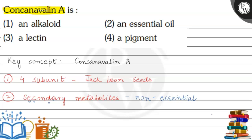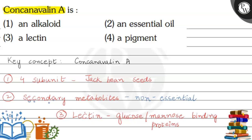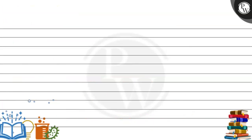There are various types of secondary metabolites, and the type to which Con Canavalin A belongs is lectin. Lectins are proteins which are glucose or mannose binding proteins — they bind to carbohydrates like glucose and mannose. Con Canavalin A is a type of lectin, and lectin is a type of secondary metabolite.